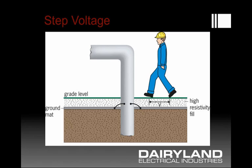The way that you see this being addressed in this diagram is that it's very common to use a safety grounding mat to make the voltage uniform across the surface of the soil in the vicinity of that pipe.